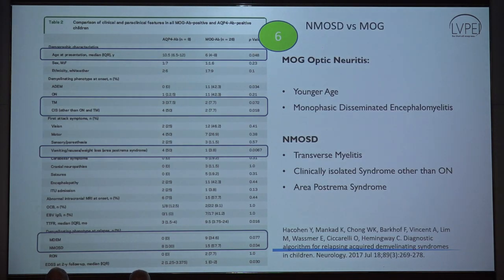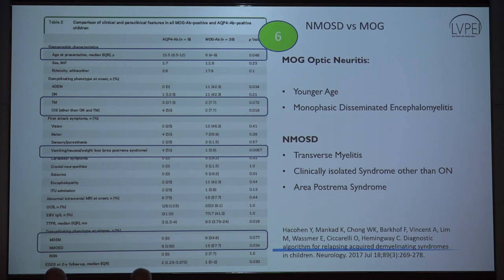The study also showed some differences between NMO versus MOG. Patients with MOG-associated optic neuritis were younger — around 6 years of age in children — and present with monophasic disseminated encephalomyelitis. Whereas NMO patients presented more often with transverse myelitis and more often with area postrema syndrome compared to MOG-associated optic neuritis.